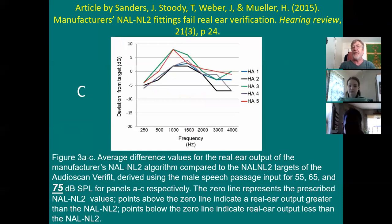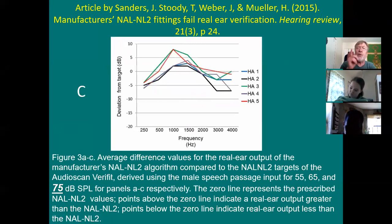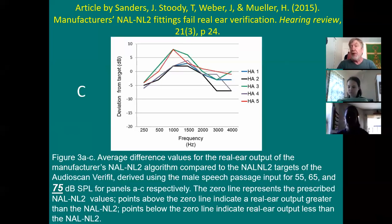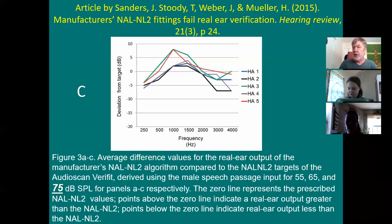For 75 dB inputs, many manufacturers' NAL-2s are asking for more output than the NAL-2 on the real ear equipment — but again, less in the highs. It's all weird, it's all strange. Not only are manufacturers' proprietary methods asking for less output than most fitting methods, but when they use NAL-2, they all use it differently. And that's why real ear cuts it — real ear is what shows what you really want.